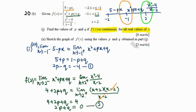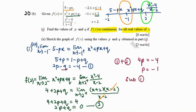We solve the simultaneous equations by adding equation 1 and equation 2 so that q is eliminated. We get 4p equals negative 4, so p equals negative 1. Substituting back into equation 1 gives negative 1 minus q equals negative 4, so q equals 2.